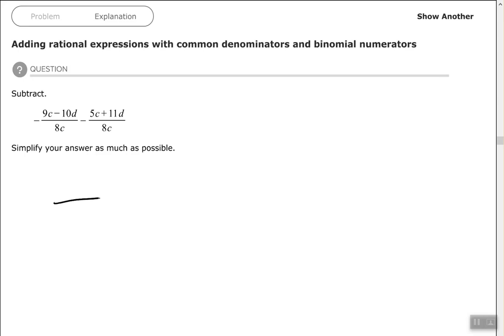We have negative, that negative is outside of the entire fraction, so I'm going to use parentheses here. And then minus, and again we're subtracting the entire fraction, so I'm going to use parentheses since we have a binomial in the numerator there, all over 8c.